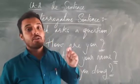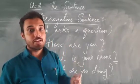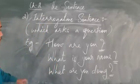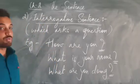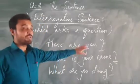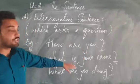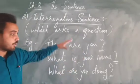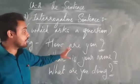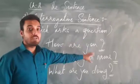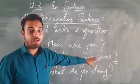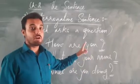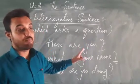Interrogative sentences always end with a question mark. For example: 'How are you?', 'What is your name?', 'What are you doing?' You can see that we have given a question mark at the end of each sentence. Always remember a question mark is always important.